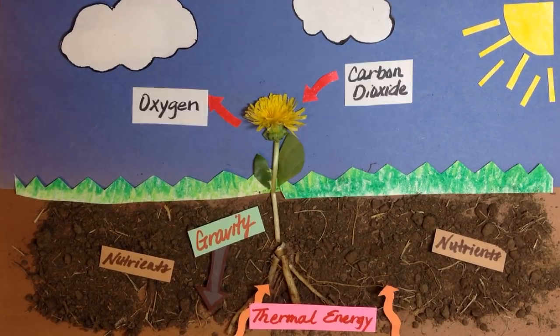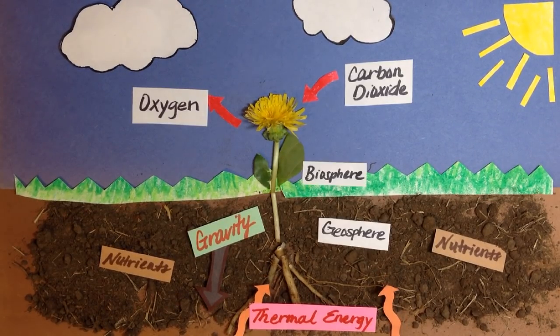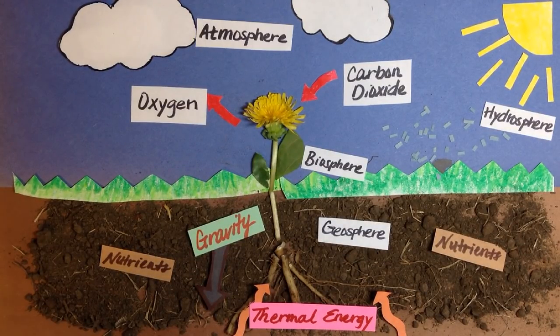Through the process of photosynthesis, the plant absorbs carbon dioxide and releases oxygen. Here, we can see the spheres working in unison.